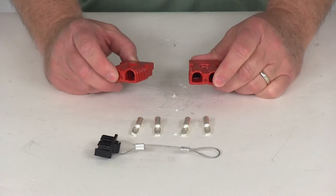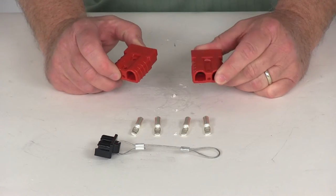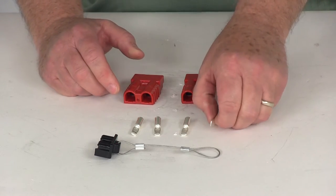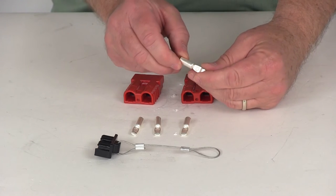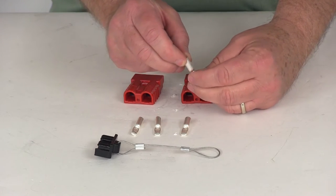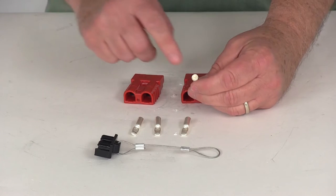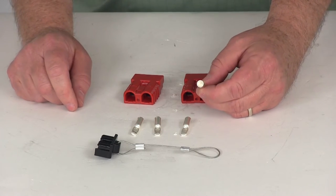Now the connectors themselves are made of a polycarbonate material for strength and durability. The terminals are high grade copper and are silver plated for resistance to corrosion. They are designed to be used with a 6 gauge wire size.